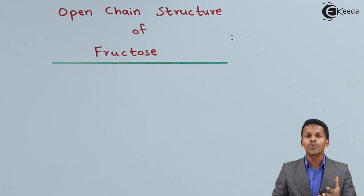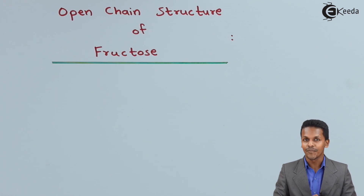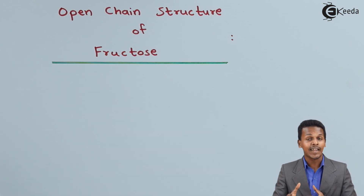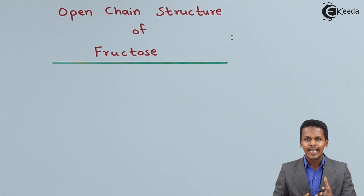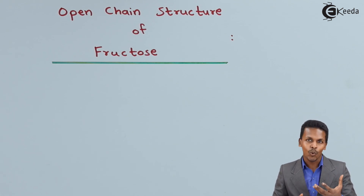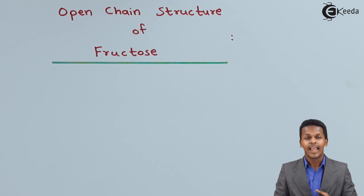Here we are going to talk about how to draw the open chain structure of fructose. Before understanding that, let us understand that fructose is nothing but a polyhydroxy ketone. It consists of multiple OH groups as well as it is a ketone, and it consists of 6 carbon atoms.